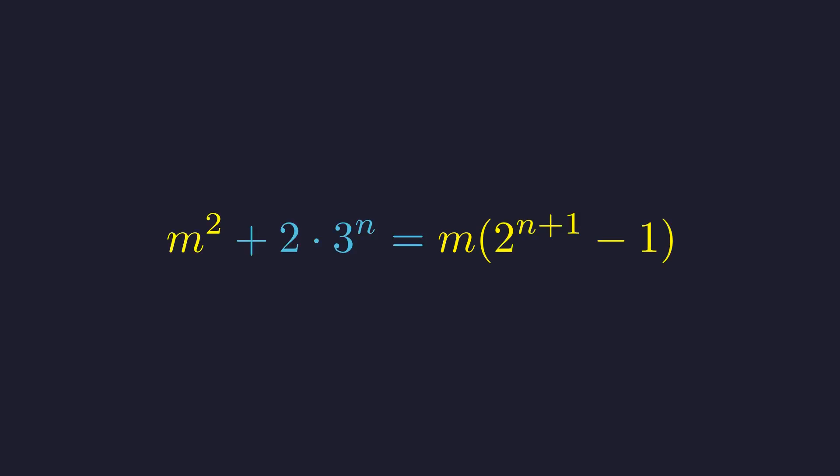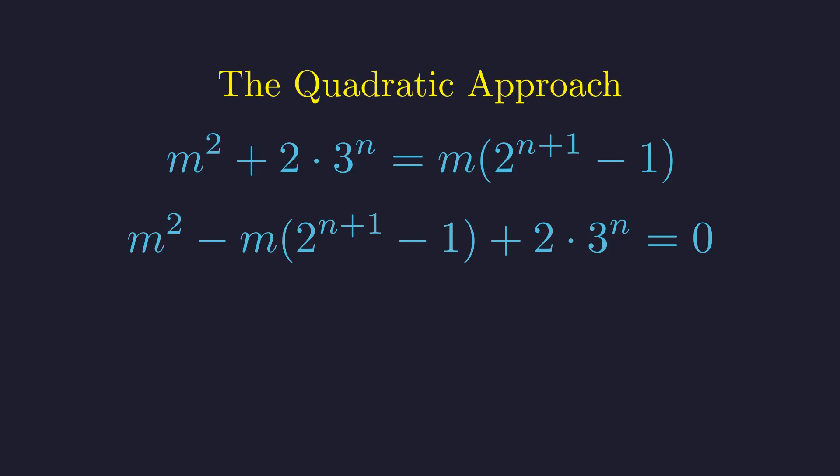The equation contains terms with m squared and m. This structure allows us to rearrange it into a quadratic equation in the variable m. We will now rearrange the equation into the standard quadratic form. The original equation is as follows. By moving all terms to the left-hand side, we obtain a standard quadratic equation set to zero. This equation fits the form a m squared plus b m plus c equals zero.